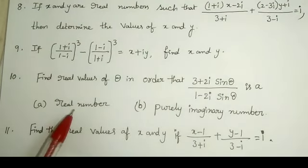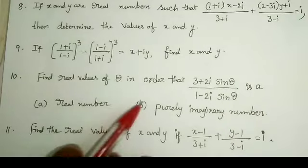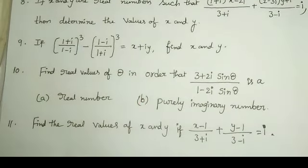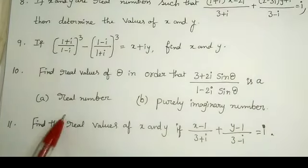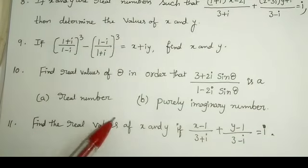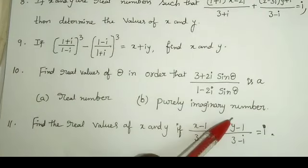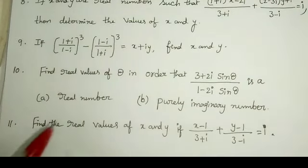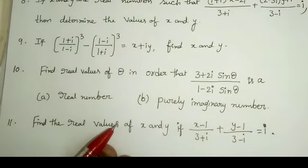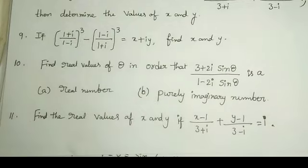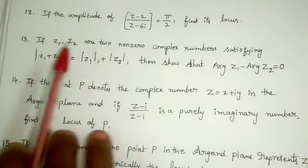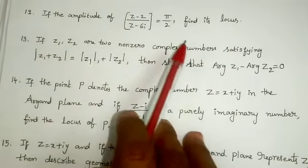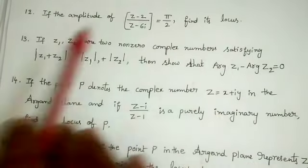Next one: find real values of theta such that the complex number 3 plus 2i sine theta by 1 minus 2i sine theta is a real number and, second case, a purely imaginary number. Next one: find the real values of x and y if x minus 1 by 3 plus i plus 5 minus 1 by 3 minus i is equal to 1. And next one: if the amplitude of z minus 2 by z minus 6i is equal to pi by 2, then find its locus.